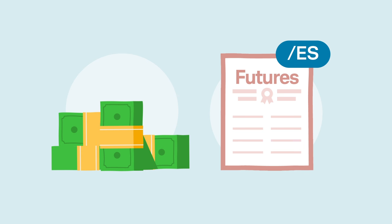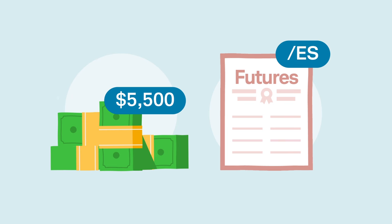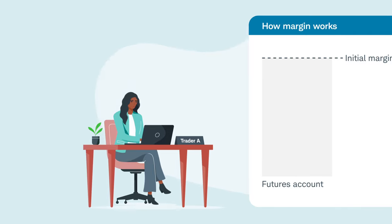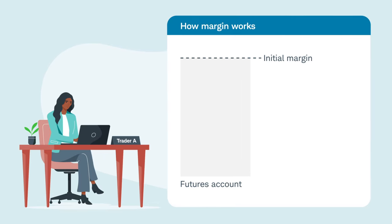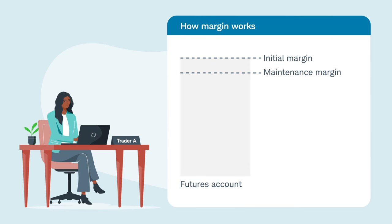In this example, let's say the initial margin requirement is $5,500 for Trader A, plus commissions and exchange fees. There are two margins she needs to be aware of when trading futures. In addition to initial margin, there's also maintenance margin.